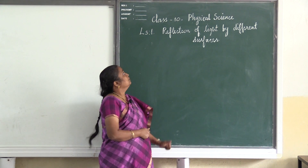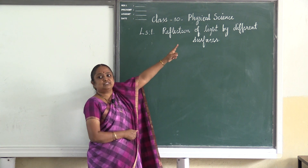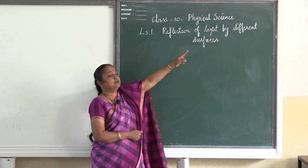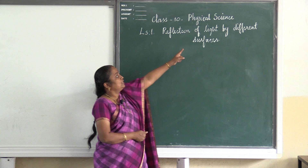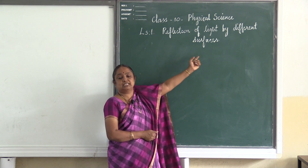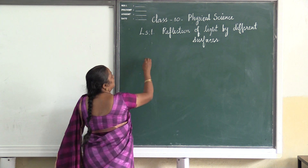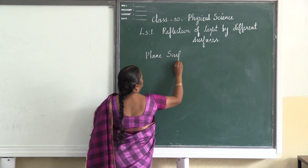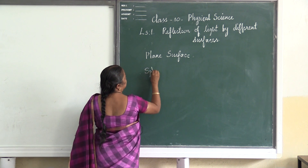Hello everyone. Today we are going to listen to a class in physical science. Our first lesson is reflection of light by different surfaces. We have reflection of light by different surfaces, which means we should know what all the different surfaces are. One is a plane surface and the other one is the spherical surface.